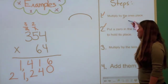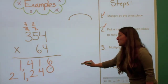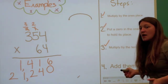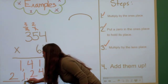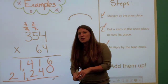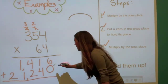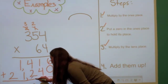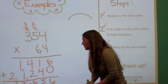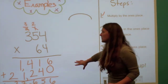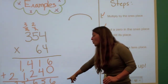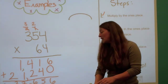I've done step one, step two, and step three. Step four is add them up. I'm going to add both numbers to get the product of this multiplication problem. Six plus zero is 6, one plus four is 5, four plus two is 6, one plus one is 2, and two plus zero is 2. So the product of 354 times 64 is 22,656.